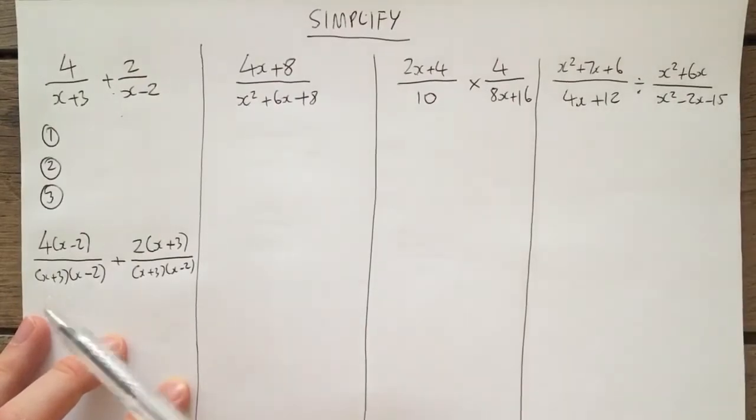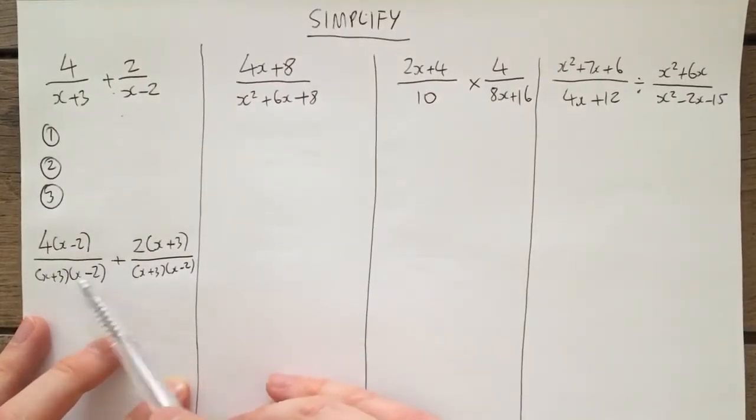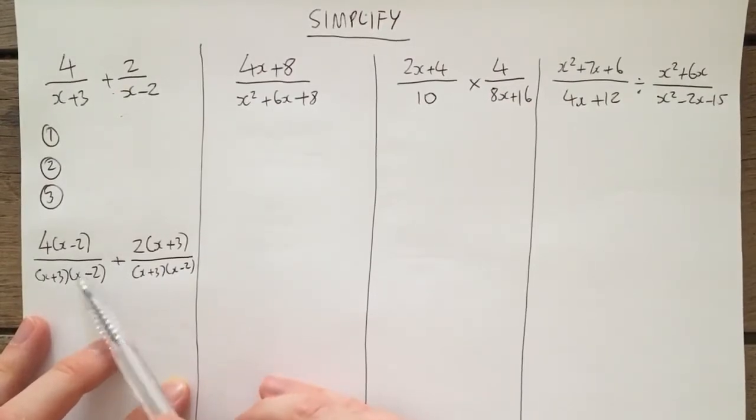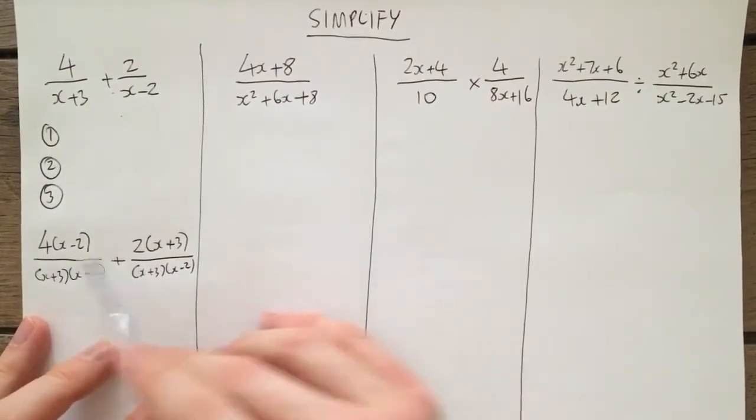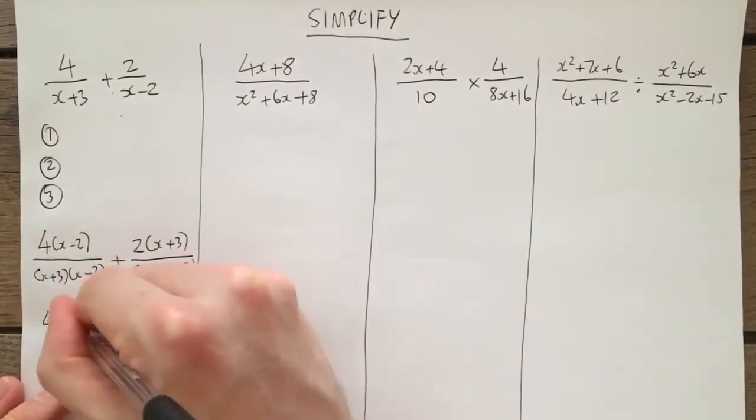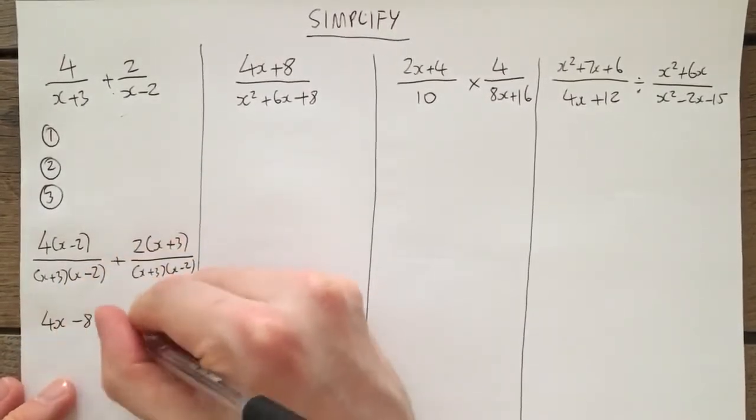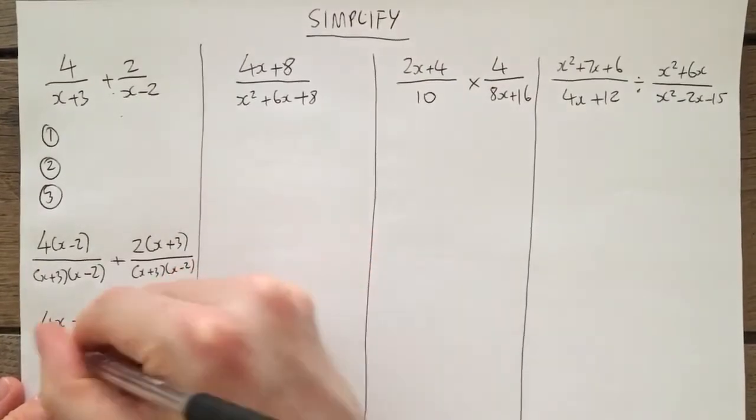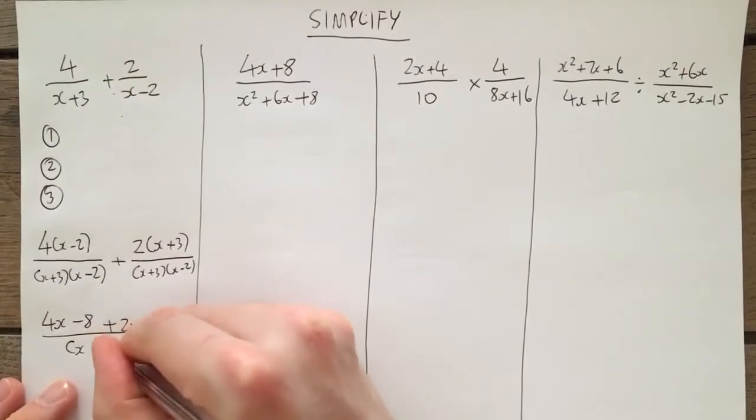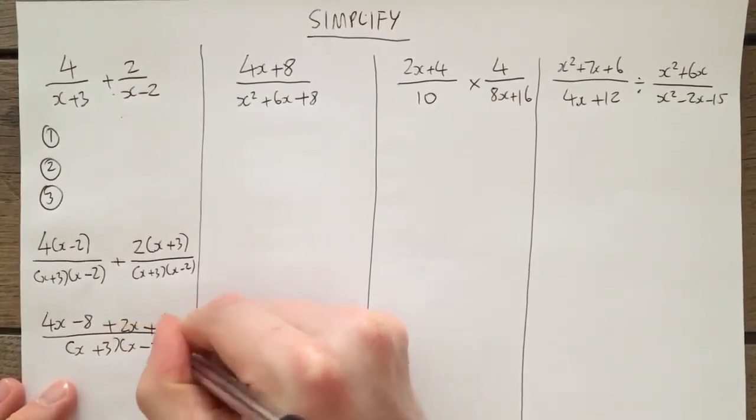OK, however, we do not expand the denominator because in its simplest form is would be as if it was factorized. So therefore, the way the next set of working out would look is this 4x minus 8 plus 2x plus 6 over, same denominator, so I'm going to write x plus 3x minus 2.